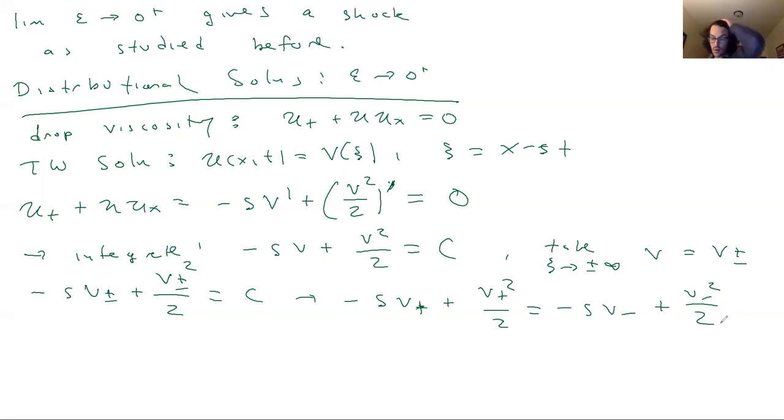We can solve for s again, sort of equating c to itself. So if we solve this, we get s(v_+ - v_-) is equal to v_+ squared minus v_- squared over 2. Or in other words, s is equal to, if we simplify things, the average of v_+ and v_-.